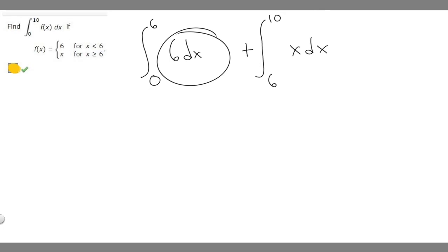So let's find the integral of this one first. The antiderivative of 6 is just going to be 6x, then we do plus c, but we can ignore that. And then what we need to do is test it from 0 to 6.